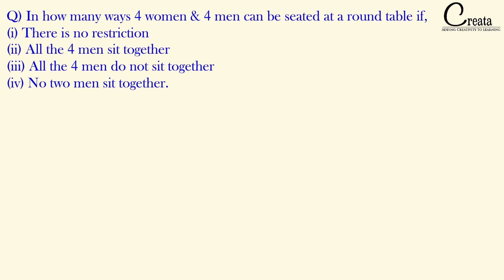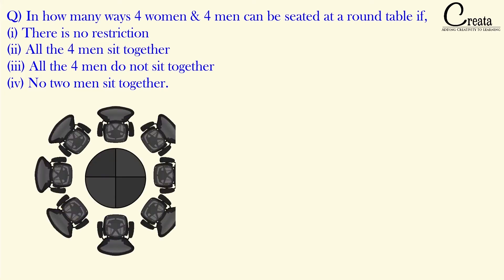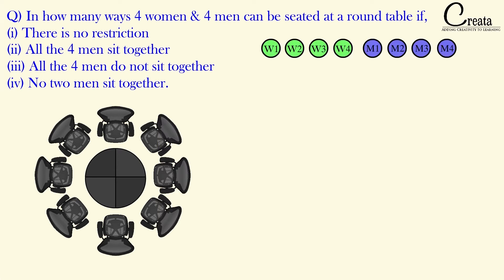Let's approach this question. We have a round table with 4 women and 4 men, and we have to arrange them around this circular table under the 4 different conditions given in the question. We will go one by one.